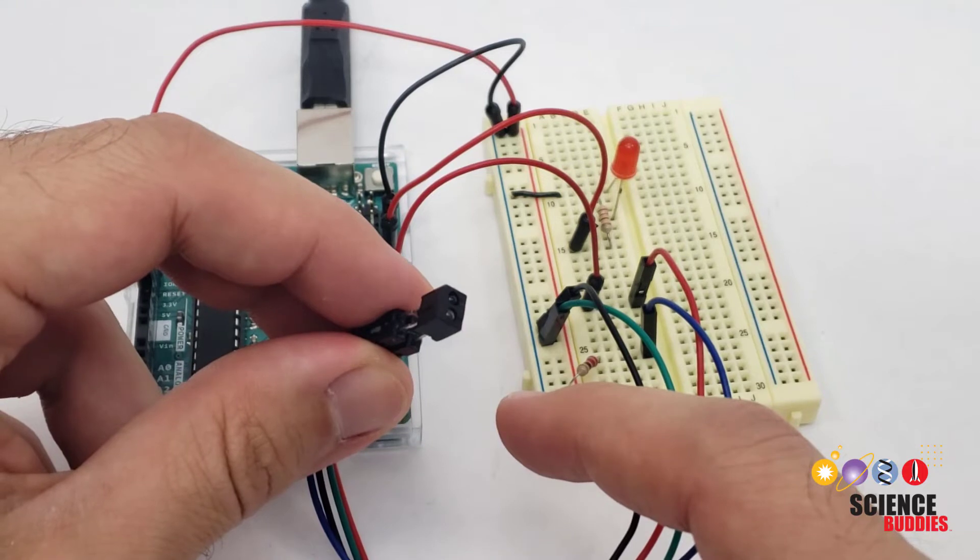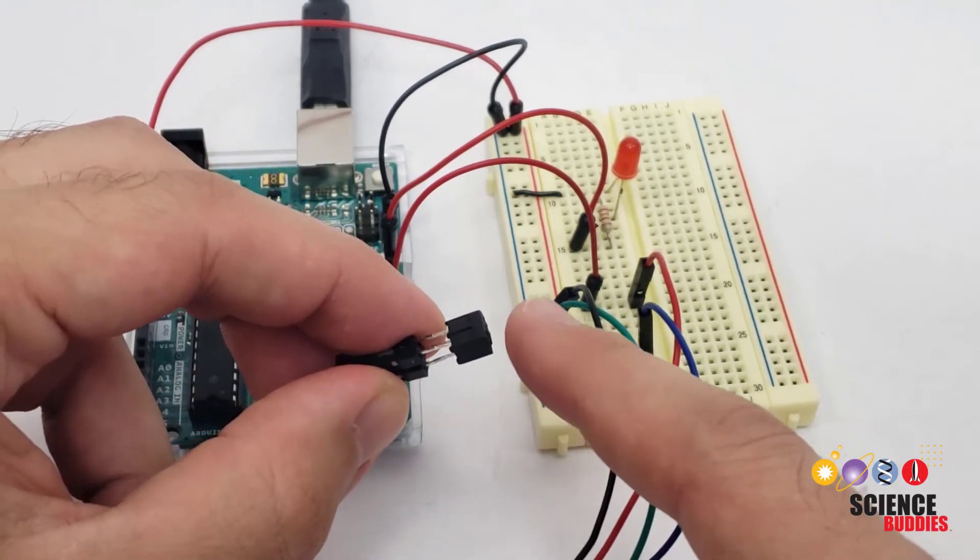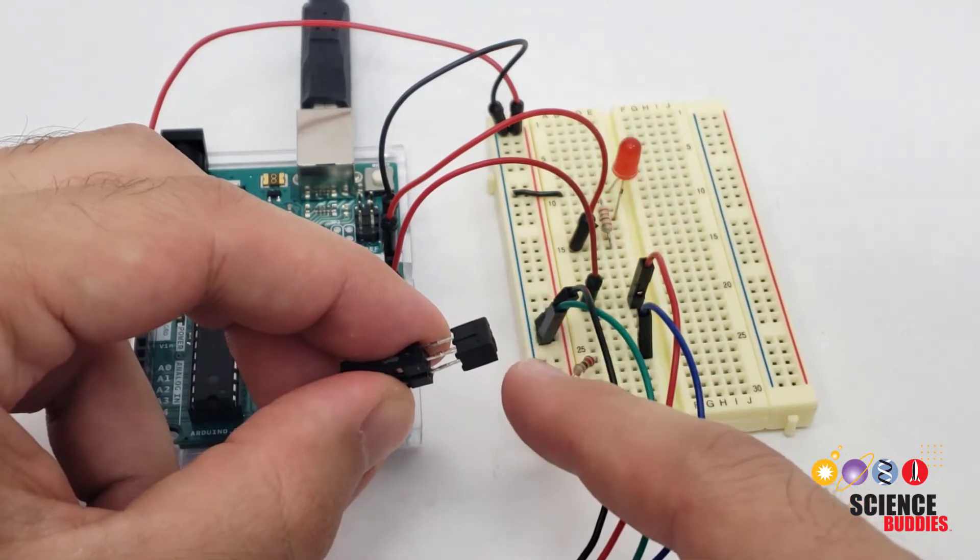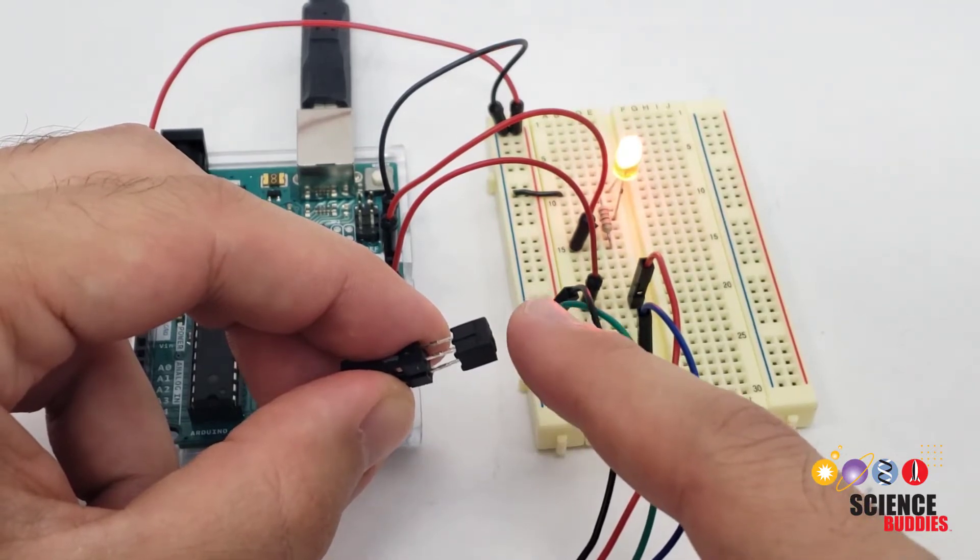There are several common uses for sensors like this. One is simply to detect the presence of a nearby object. You can see here the LED lights up when I move my finger in front of the sensor.